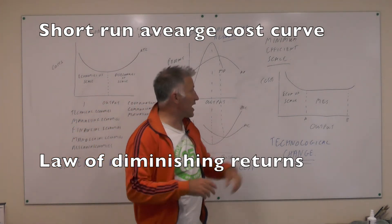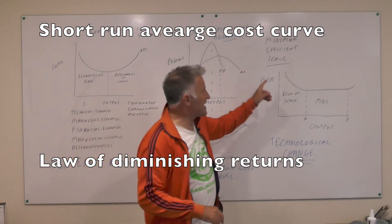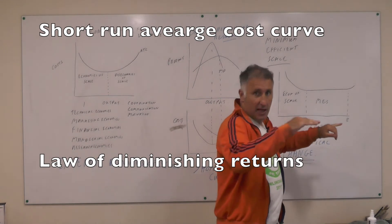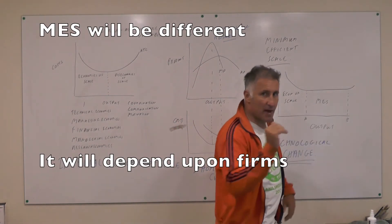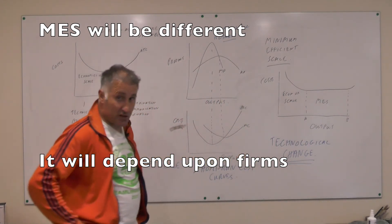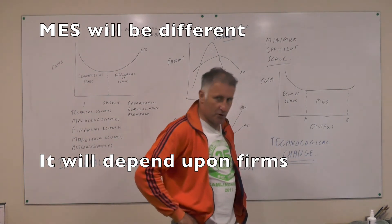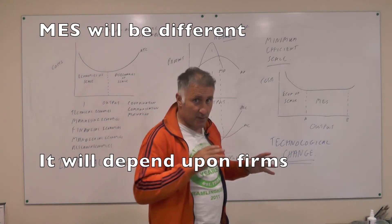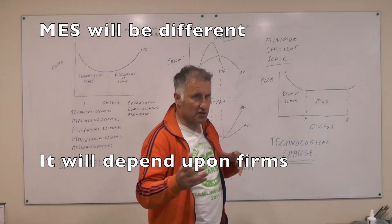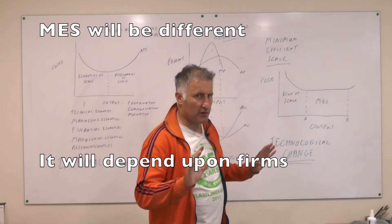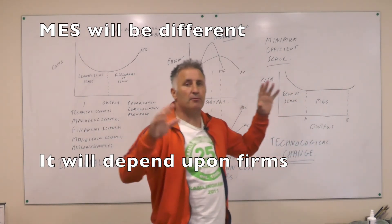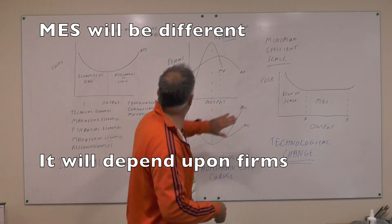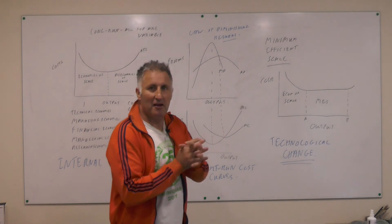Finally, we have the minimum efficient scale — this is the lowest point on the average total cost curve. Sometimes the curve is said to be L-shaped, meaning you reach that point and it's difficult to reduce costs further. The minimum efficient scale may persist for a long time and will differ across firms. Car firms have a large minimum efficient scale; the airline industry is very expensive — Boeing produces in America and Airbus in Europe — so their minimum efficient scale is huge because of the large manufacturing plant required. So this covers cost curves — long run and short run.